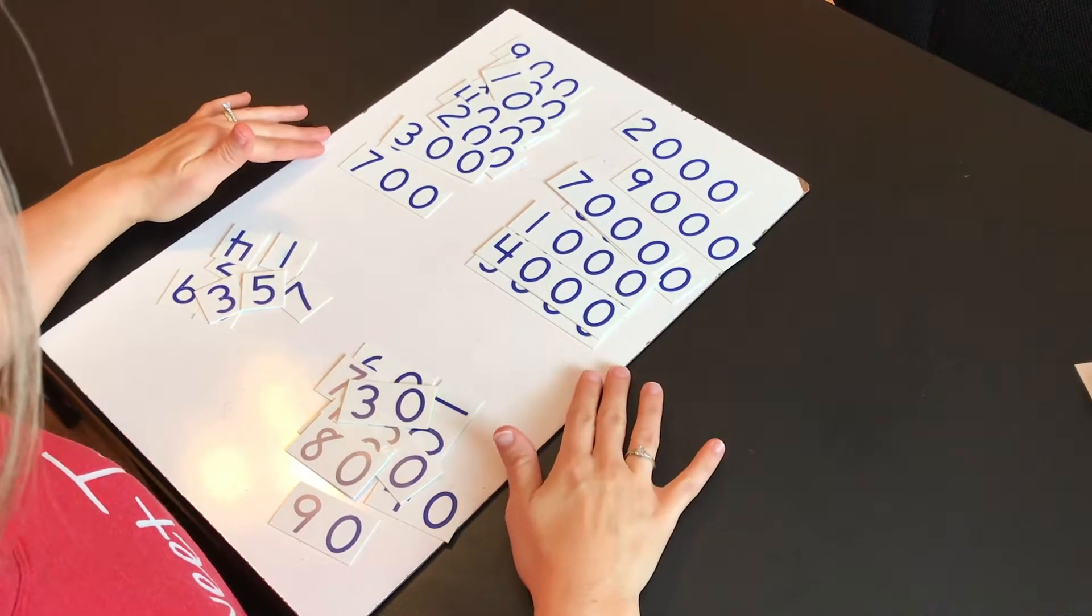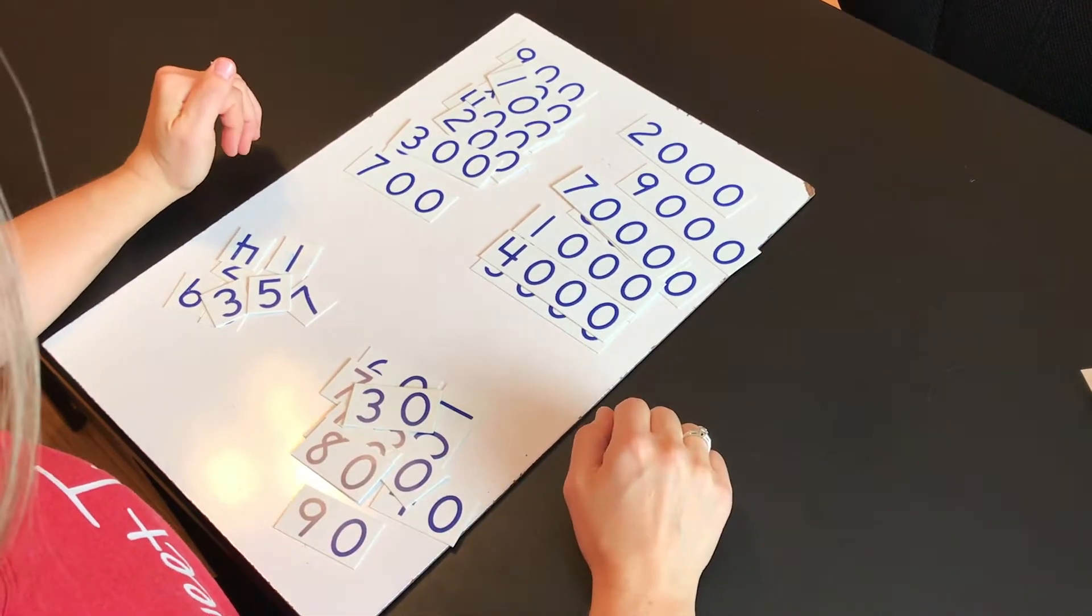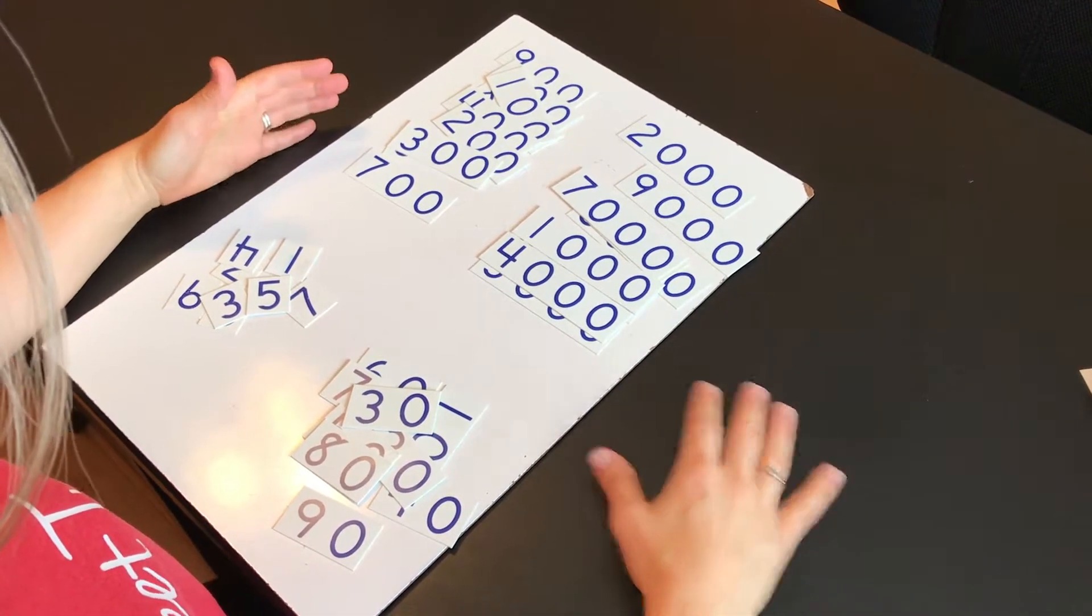The other thing I love are these place value cards because it's easy for the child to see the ones, the tens, the hundreds, and the thousands. And it's great for them to be able to build numbers.